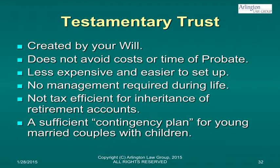A testamentary trust is a trust that's created by your will. It doesn't avoid probate — you still have to go through the court process to get everything to the beneficiaries. But basically it says: if I die and my spouse has already died and I've got kids under the age of 25, then instead of just giving the money to the kid — who's going to spend it all when they turn 18 in Las Vegas — set up this new trust and hold the money for Junior until he finishes college, turns 25, or half at 25 and half at 30, whatever rules you want. A lot of flexibility.